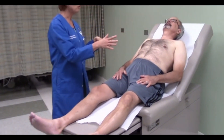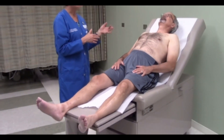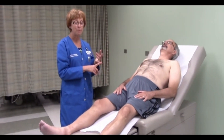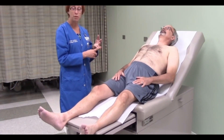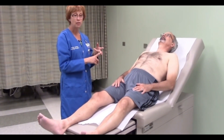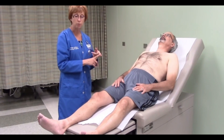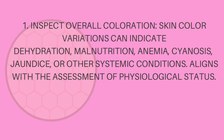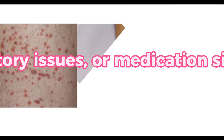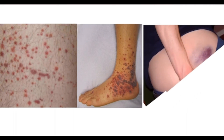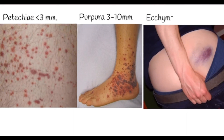Assessing the Skin. Step 1: Inspect overall coloration. Skin color variations can indicate dehydration, malnutrition, anemia, cyanosis, jaundice, or other systemic conditions. Aligns with assessment of physiological status. Step 2: Inspect for vascularity, bleeding, and bruising. This detects potential injuries, circulatory issues, or medication side effects. Aligns with assessment of circulatory and integumentary integrity.